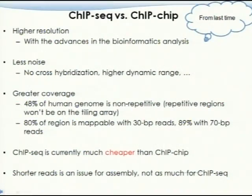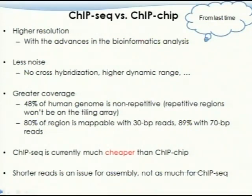We discussed the comparison between ChIP-seq and ChIP-chip. ChIP-seq is not the first technology for genome-wide analysis, but ChIP-seq has higher resolution, less noise, and greater coverage. About 48% of the human genome is non-repetitive — 52% is repetitive, so those regions won't be designed on a tiling array. But with ChIP-seq, 80% of regions are mappable with 30 bp reads and 89% with 70 bp reads, because some repetitive regions border non-repetitive regions that help anchor the mapping.